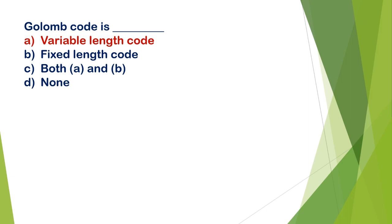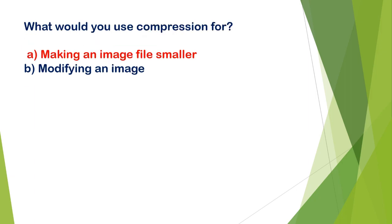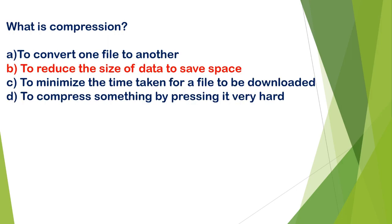Golomb code is A) a variable length code, B) a fixed length code, C) both A and B, D) none. The correct answer is A, Golomb code is a variable length code. What would you use compression for? A) making an image file smaller, B) modifying an image. The correct option is A, making an image file smaller.